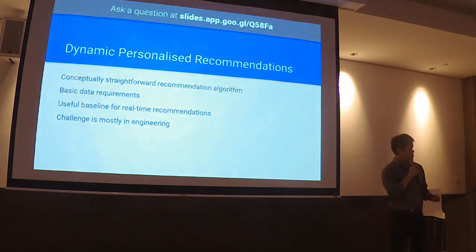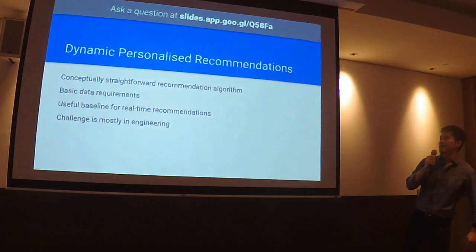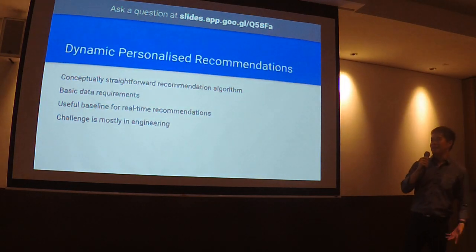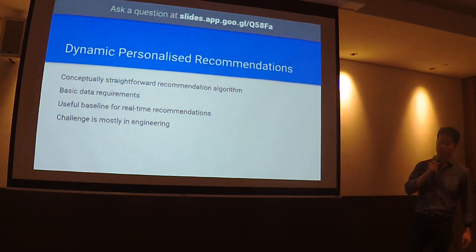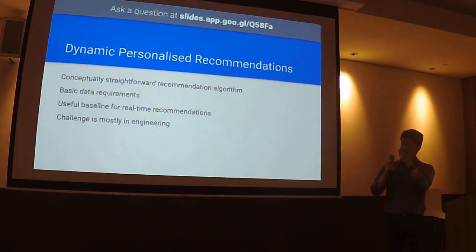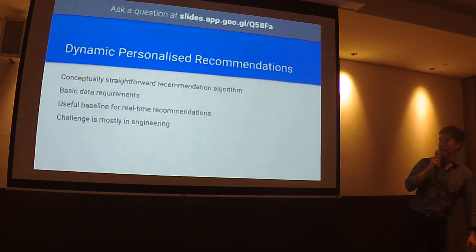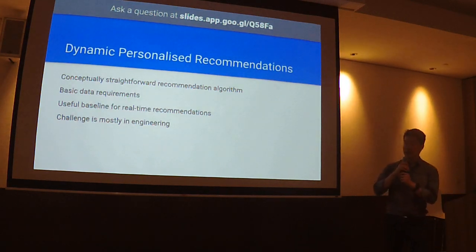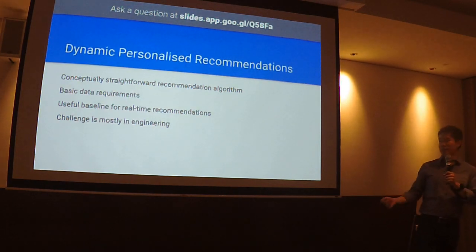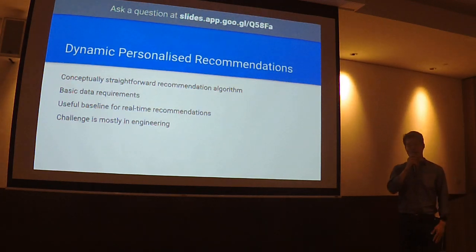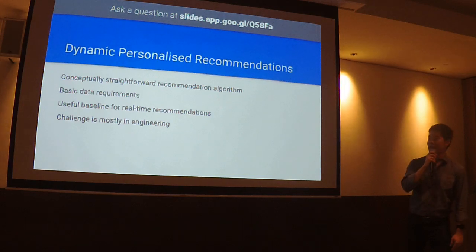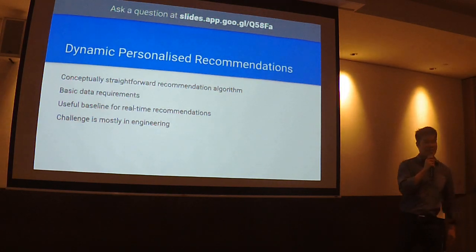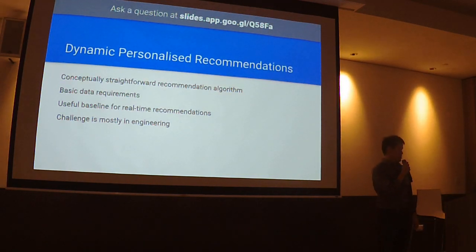So that's what I've covered. In conclusion, I've talked about an algorithm that can do dynamic personal transformations. This is actually a very straightforward recommendation algorithm. It has a very basic data requirement. However, it is still a useful baseline to do real-time recommendation, and the main challenge is in doing the engineering.